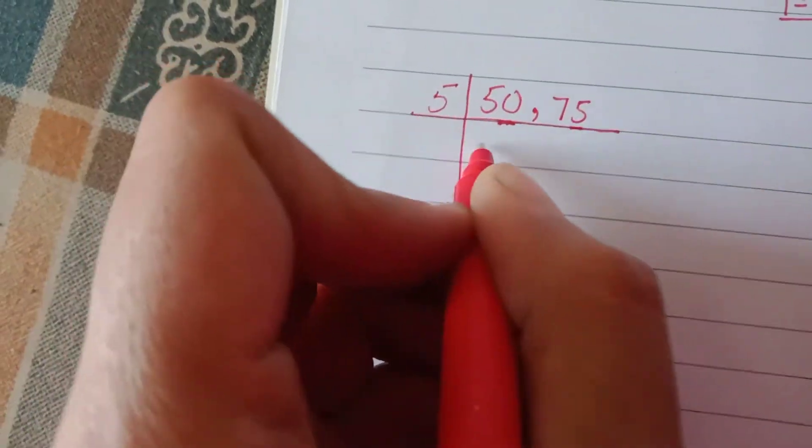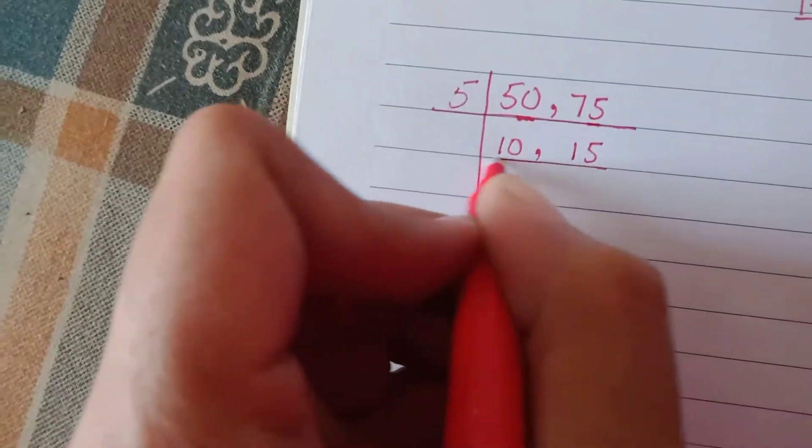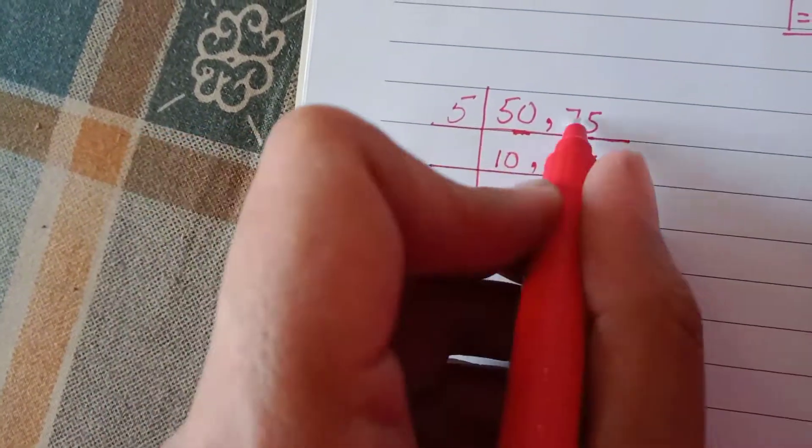So, we'll take the common multiple and divide by 5. 5 into 50 is 10. 5 into 15 is 3. So again, 5 into 75 is 15.